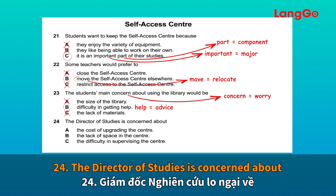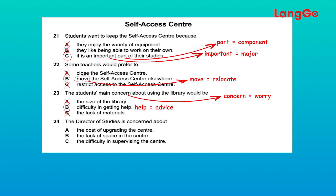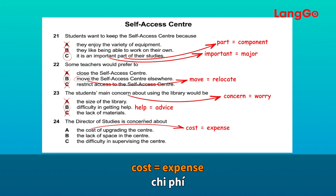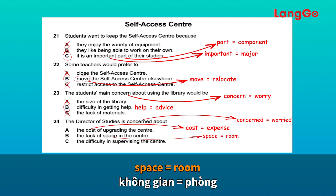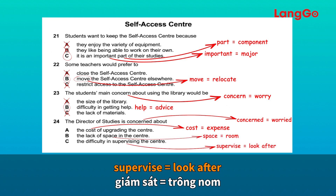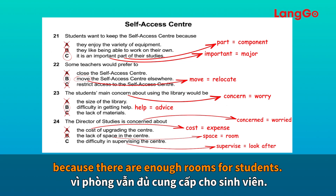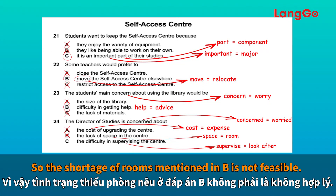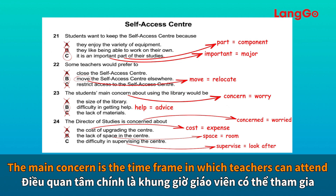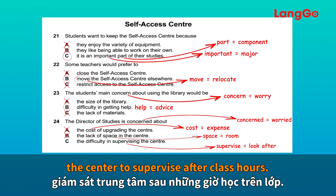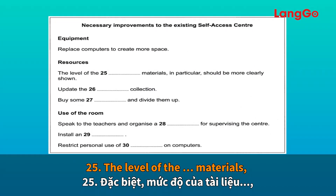Number 24: the director of studies is concerned about — it's not so much the expense that she's worried about, and they've certainly got room, but it's the problem of timetabling a teacher to be there outside class hours. Useful synonyms: 'cost' and 'expense,' 'concerned' and 'worried,' 'space' and 'room,' 'supervise' and 'look after.' Expense is not the issue, so A is incorrect. There is enough room, so B is not feasible. The main concern is the timetabling of teachers to supervise after class hours, so the answer is C.